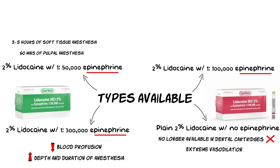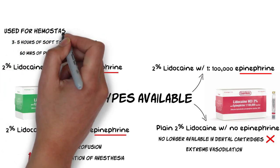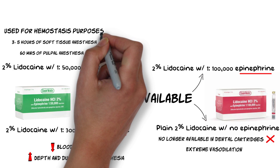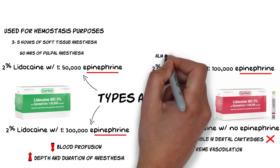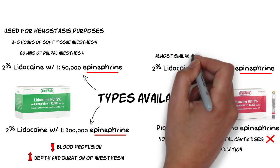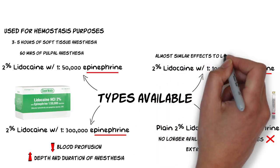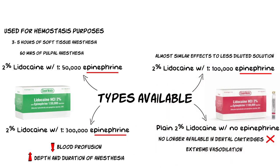The only recommended use of the 1:50,000 epinephrine solution is for hemostasis purposes — situations in which only small amounts of anesthetic are injected into the surgical site. The same effects of increasing anesthetic duration, decreased blood flow into the area, and decreased blood levels of anesthetic can also be observed with the formulation of 1 part per 100,000 parts of epinephrine.